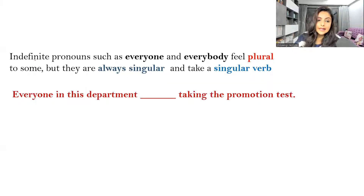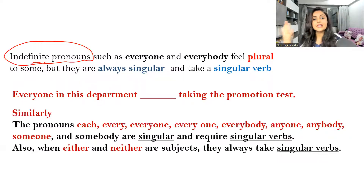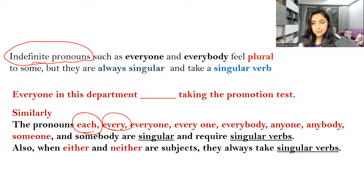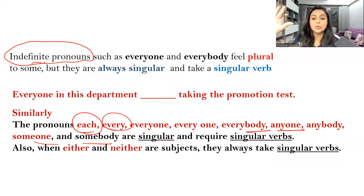So let's understand the concept. The concept is called indefinite pronouns. What are indefinite pronouns? Words like: everyone, someone, everybody, anybody, each one, anyone, somebody — we call these indefinite pronouns.